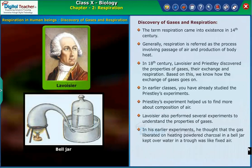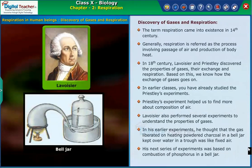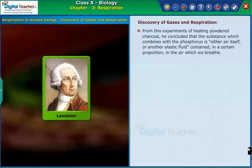In his earlier experiments, Lavoisier thought that the gas liberated on heating powdered charcoal in a bell jar kept over water in a trough was like fixed air. His next series of experiments was based on the combustion of phosphorus in a bell jar. From these experiments, he concluded that the substance which combines with the phosphorus is either air itself or another elastic fluid contained in a certain proportion in the air which we breathe.